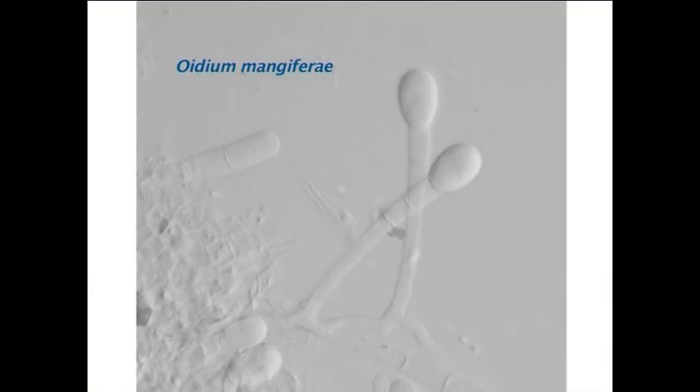Oidium mangiferae is the causal organism of mango powdery mildew. The mycelium is hyaline and produces conidiophores on which conidia are formed. It produces septate, hyaline, branched, and superficial mycelium. Haustoria are sub-epidermal. Conidia are hyaline, unicellular, elliptical, and are borne singly or rarely in chains.